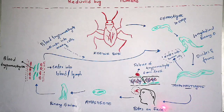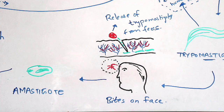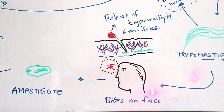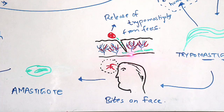The trypomastigotes will bite on the face of humans — specifically when the human is in deep sleep during night time, not in the day time. The kissing bug will bite the man on the head region. The insect releases fecal matter, and this fecal matter consists of trypomastigotes. From the fecal matter, the trypomastigotes are released and enter into the skin. The green colored structures drawn here indicate the trypomastigotes entering into the skin.